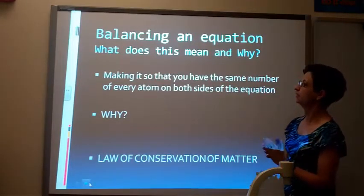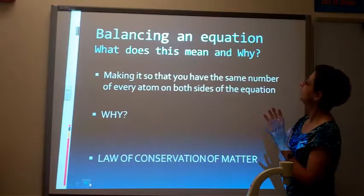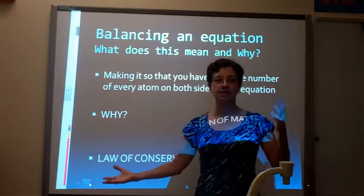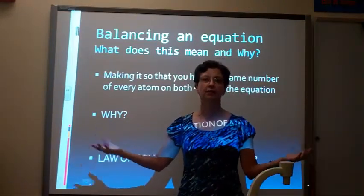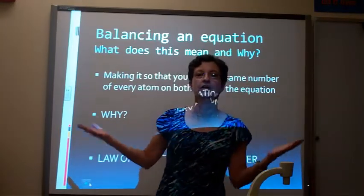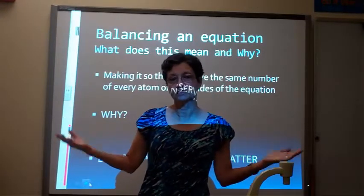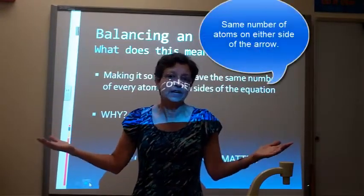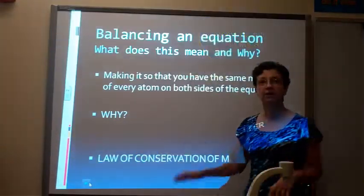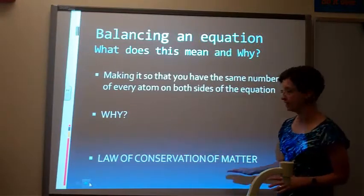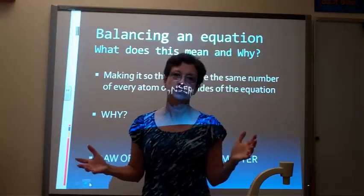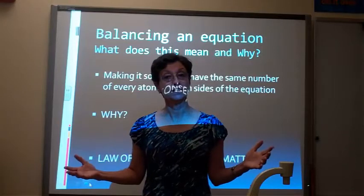There are some things that you want to remember. Balancing an equation — what does this mean? Well, you want to make it so that both sides of the equation are equal in the number of atoms: the reactant side and the product side. You have to have the same number of atoms of each type. We count the number of atoms on each side. Why? Because there's a law called the law of conservation of matter — you probably learned this in physics last year.